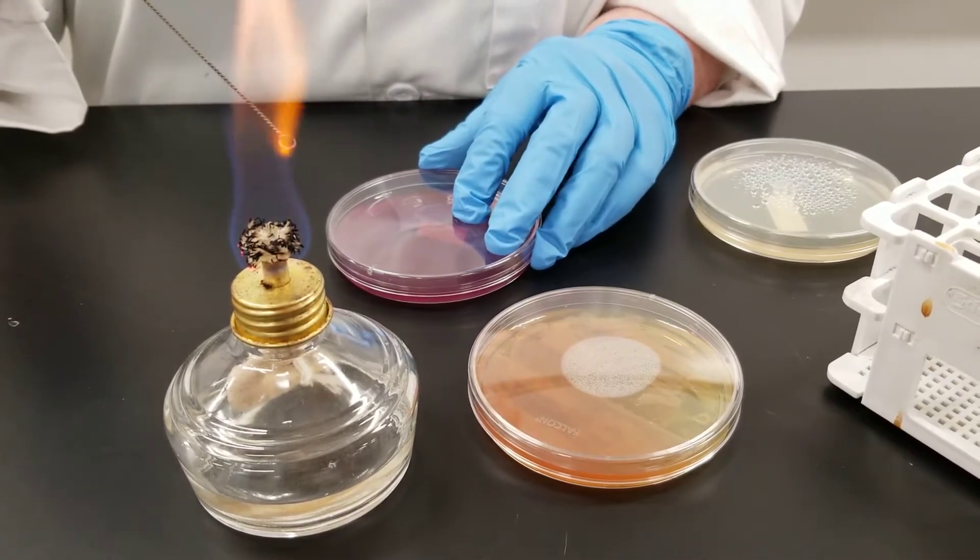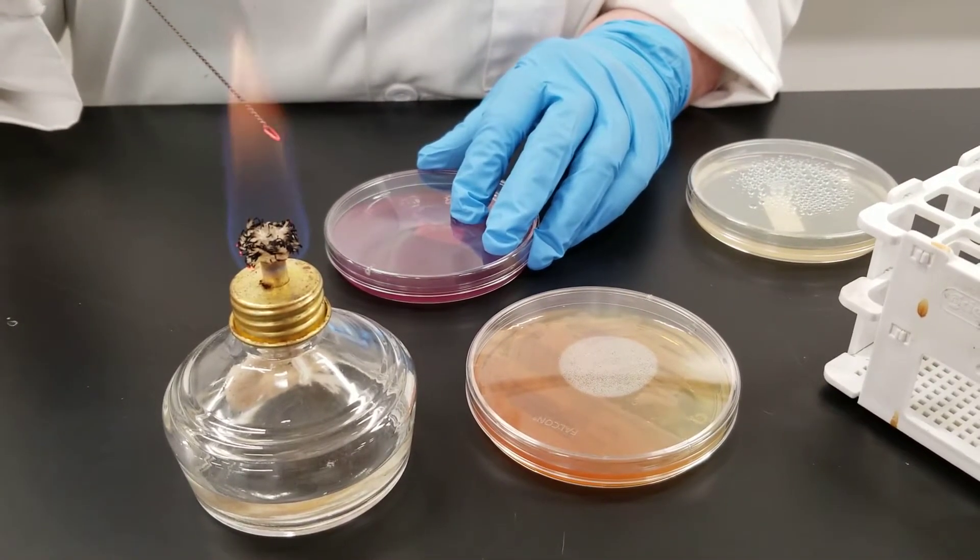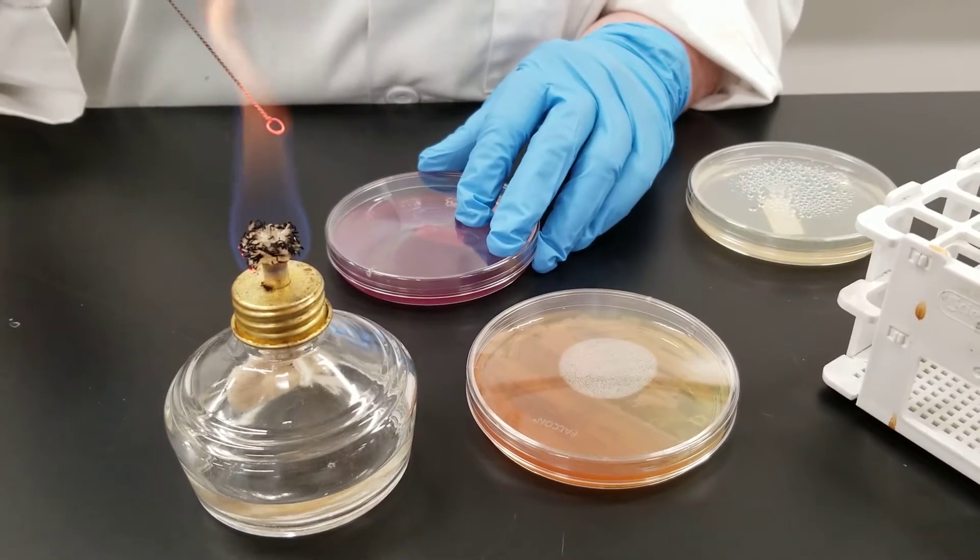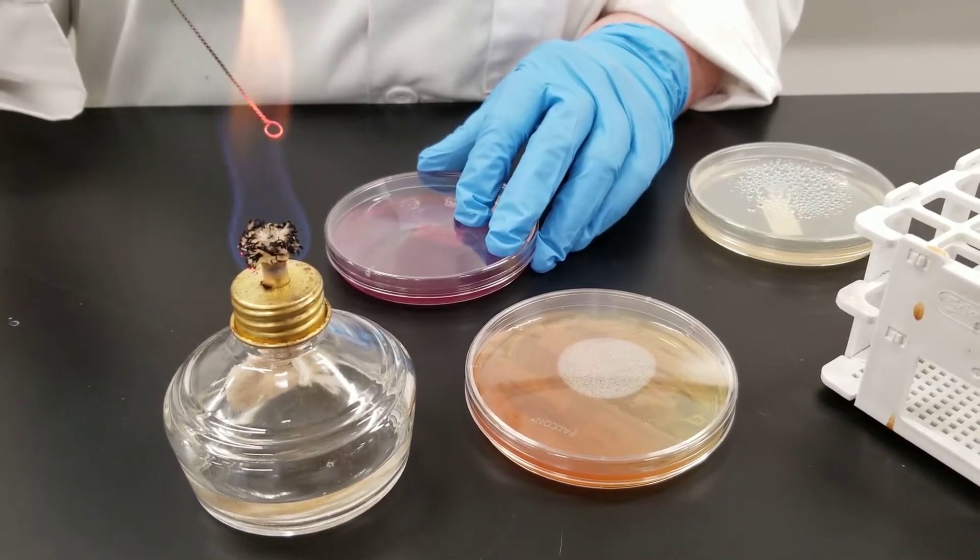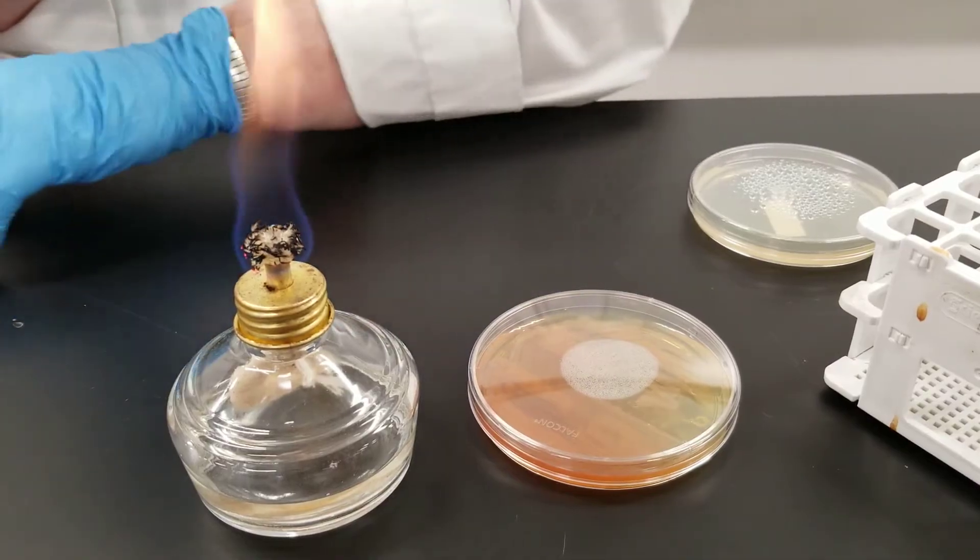When you're done, you need to flame your loop again. You still have bacteria on there so you need to sterilize it. Get it nice and glowing. This plate is done now.